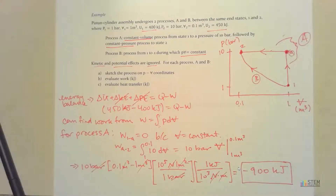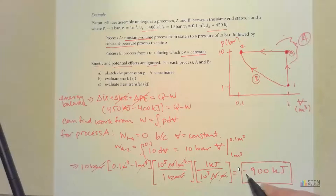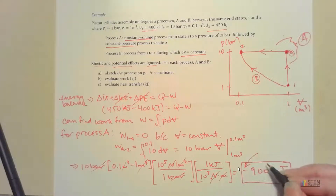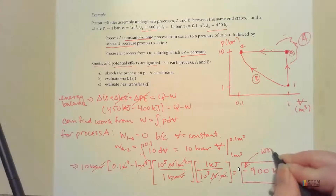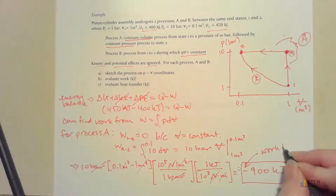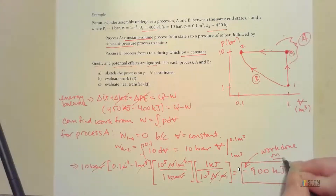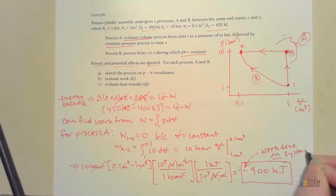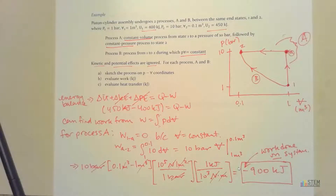Pay attention to the sign — the work is negative 900 kilojoules, which means work is being done on the system. There's external energy being transferred in to make that compression happen.